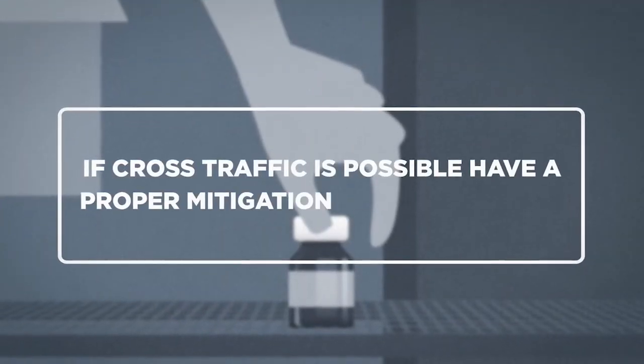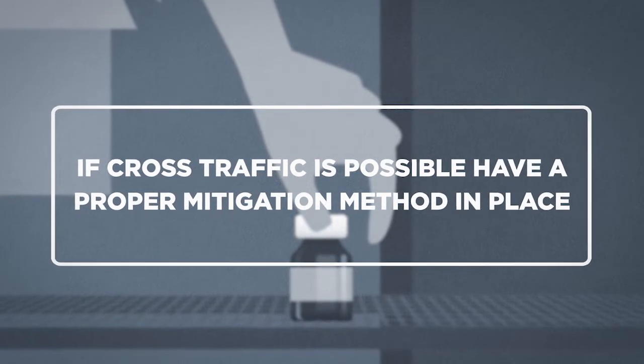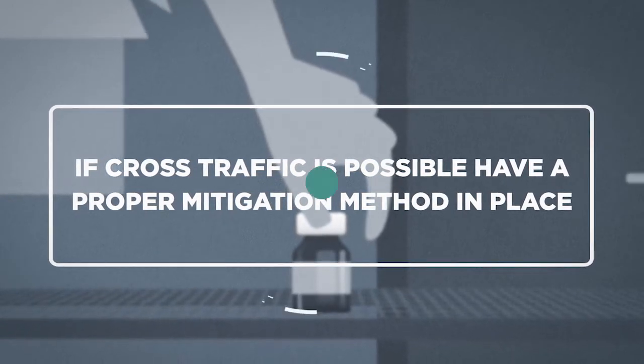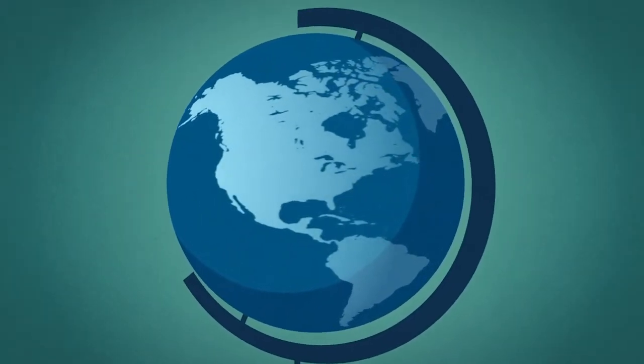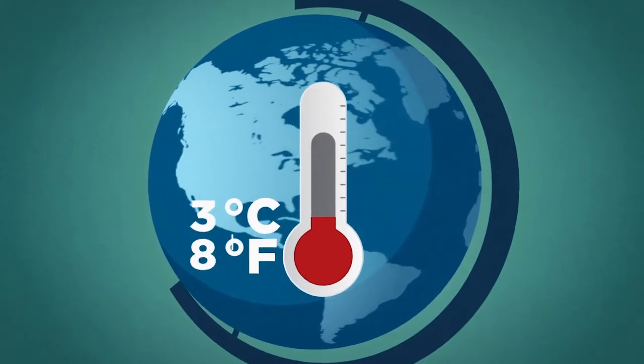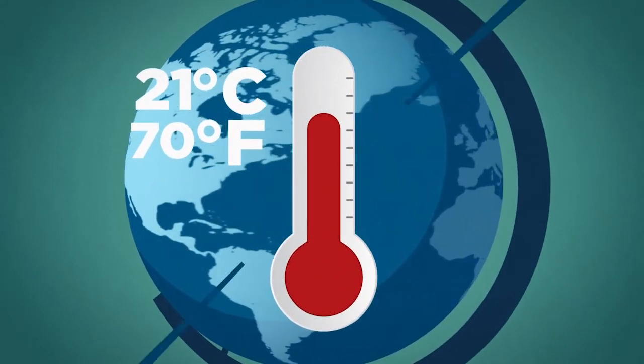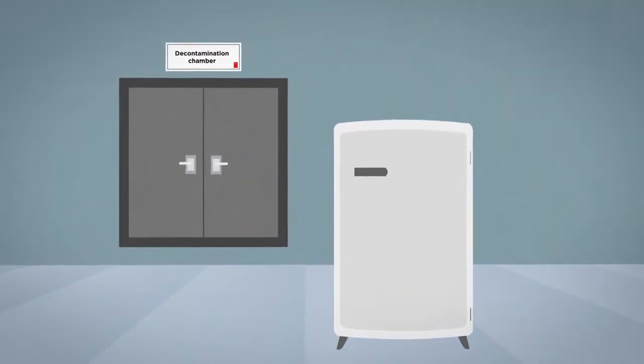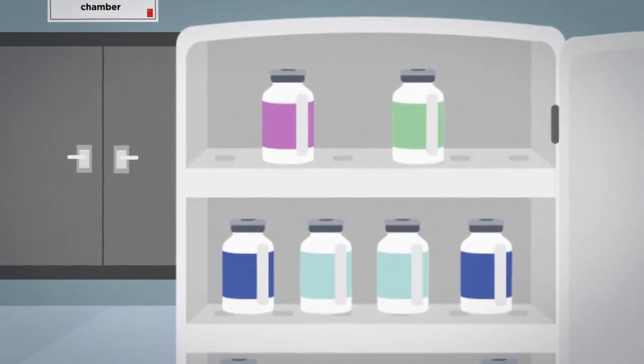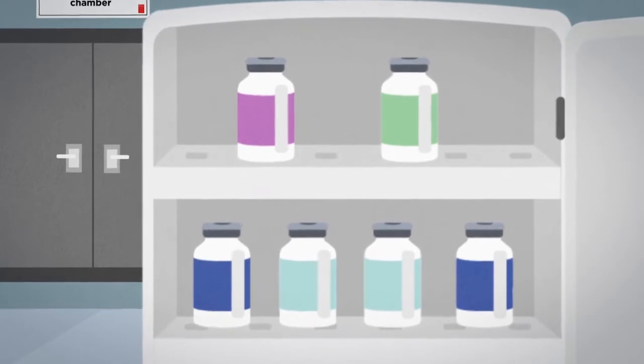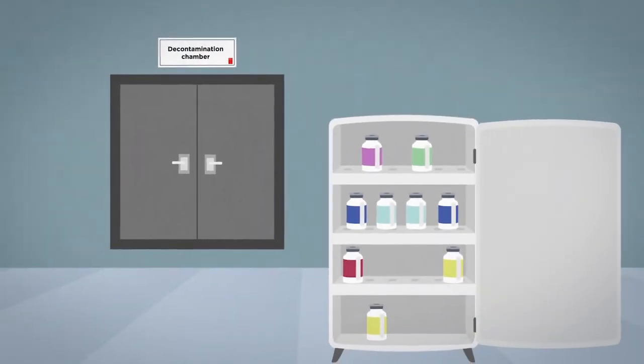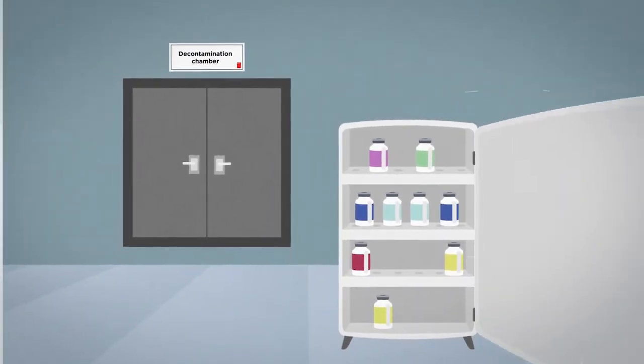If cross-traffic is possible, have a proper mitigation method in place. In countries with winter weather, heating is required to maintain a minimum of 21 degrees Celsius or 70 degrees Fahrenheit throughout the year. To receive heat-sensitive items such as vaccines, it's important to have a refrigerator in the dirty area and only remove materials immediately prior to disinfection.